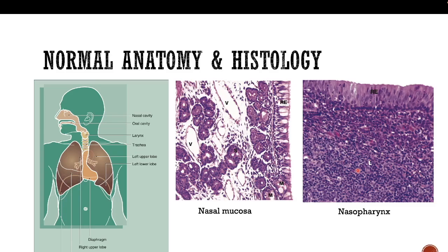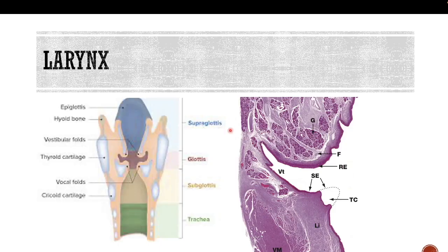When we go down to the larynx, in the external anatomy it is divided into supraglottis, glottis, subglottis, and trachea. In the supraglottis, it consists of the false cord which is lined by respiratory type epithelium. Then you have the ventricles — the hollow spaces within the false and true cord — and then you have the true cord which is lined by squamous epithelium.